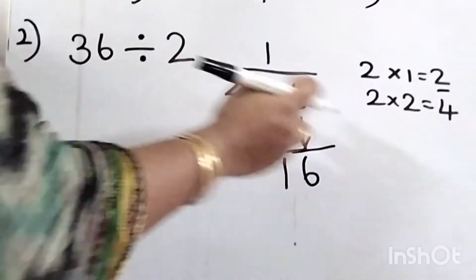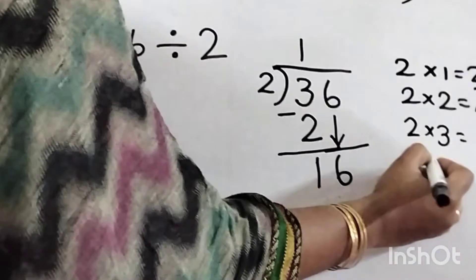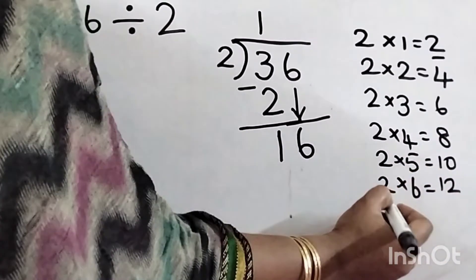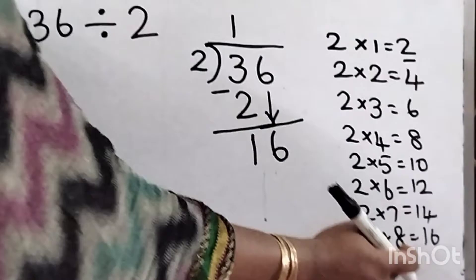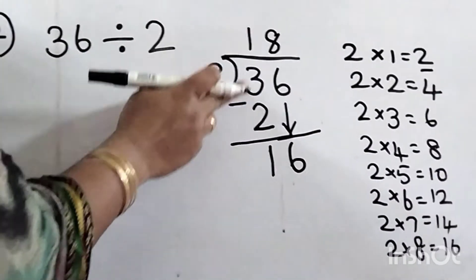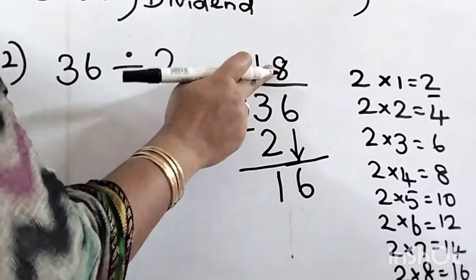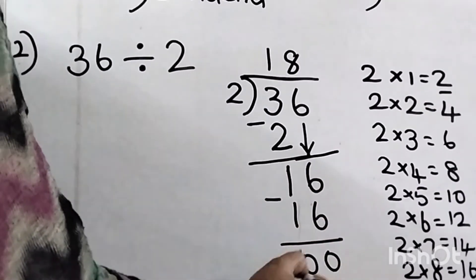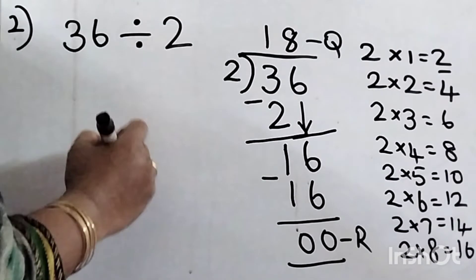Say 2 tables and look for 16: 2 threes are 6, 2 fours are 8, 2 fives are 10, 2 sixes are 12, 2 sevens are 14, 2 eights are 16. We got 16 — that is 8 times. When you take the second number, write the digit at the top of the second number. Write 16, subtract: 6 minus 6 is 0, 1 minus 1 is 0. So 18 is the quotient, remainder is 0. 36 divided by 2 equals 18.